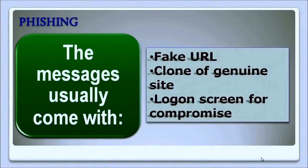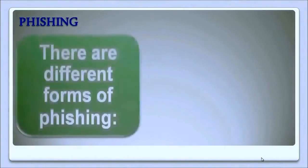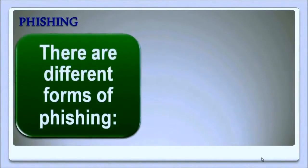The malicious individual can then use these compromised logon details to carry out further attacks. They could use that to compromise the individual, their organization, or other organizations. They can also use compromised accounts to create botnets — robot networks — which they can use to compromise systems.